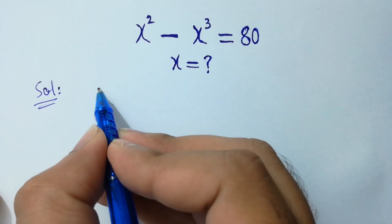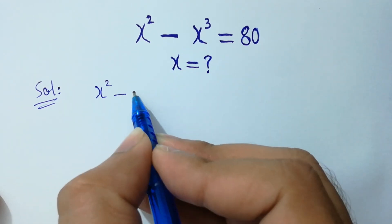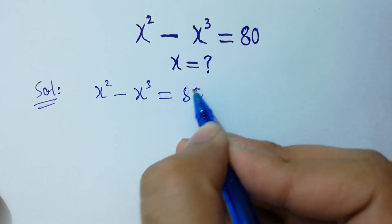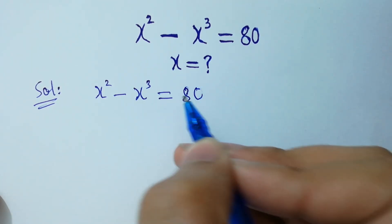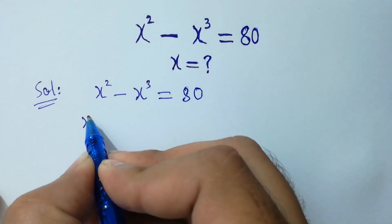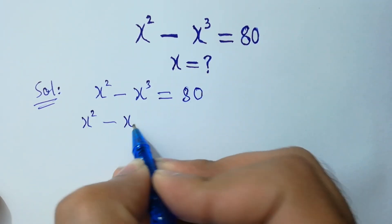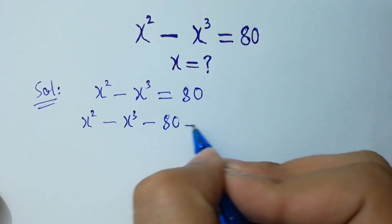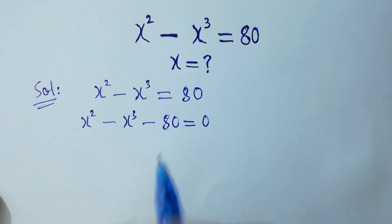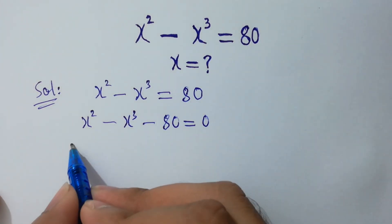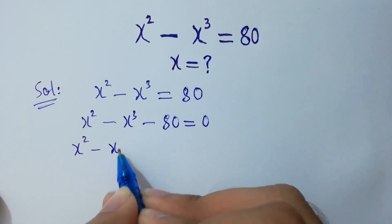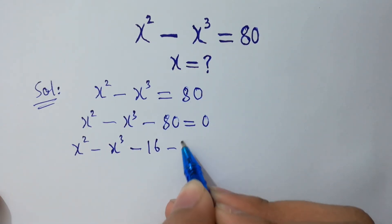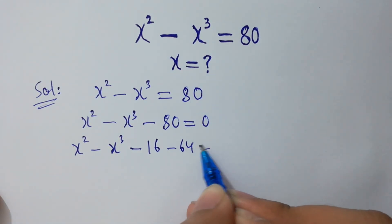x squared minus x cubed equals 80. It will be equal to x squared minus x cubed minus 80 equals 0. I can consider 80 as 16 plus 64, which equals 0.